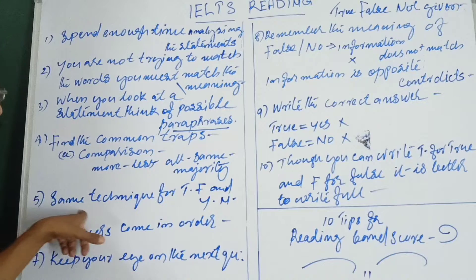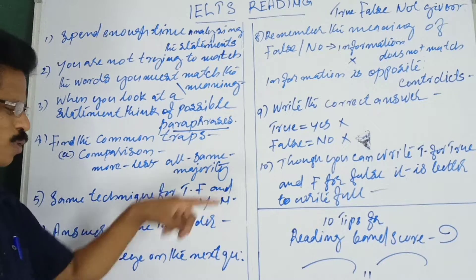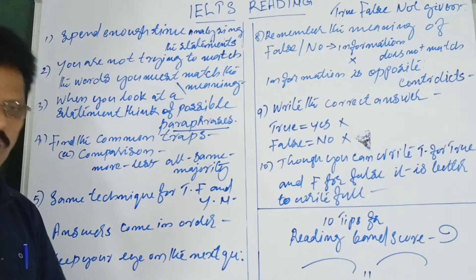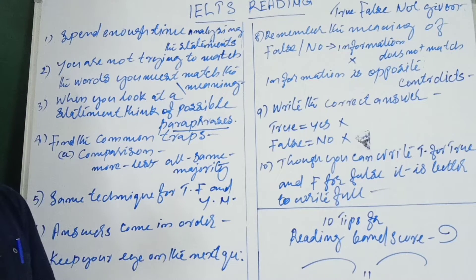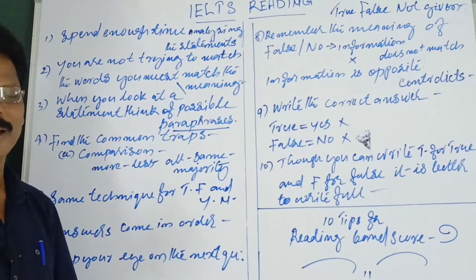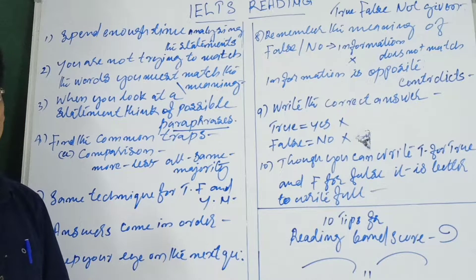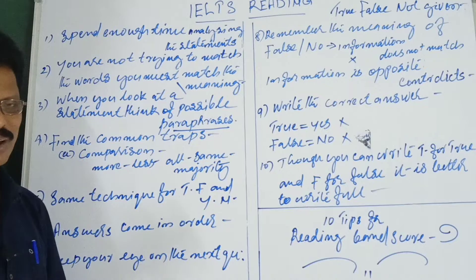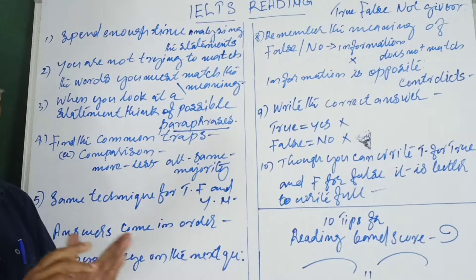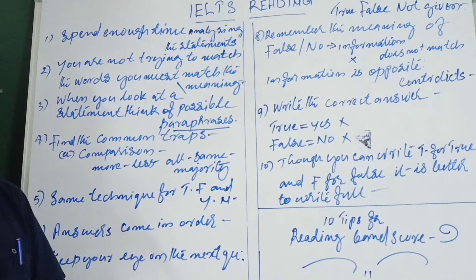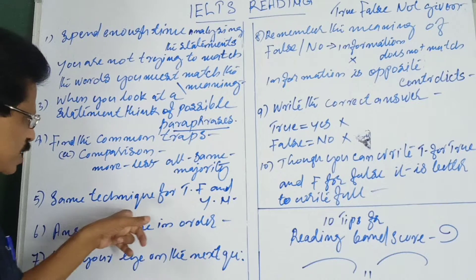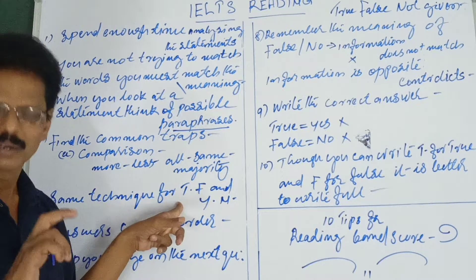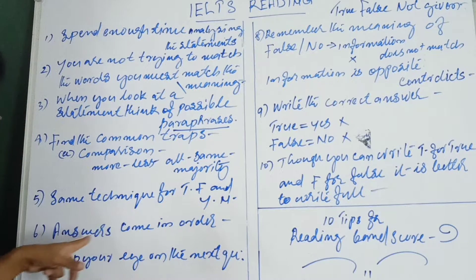Tip number five: the technique for True/False and Yes/No is the same. The difference is that True/False deals with factual information, while Yes/No deals with the writer's opinion. But the technique to find the answer is the same for both.